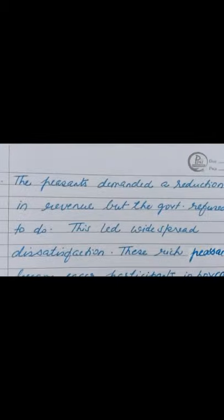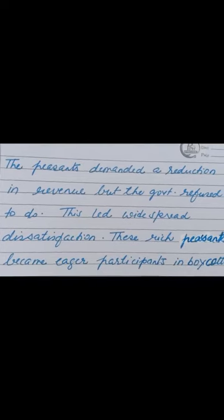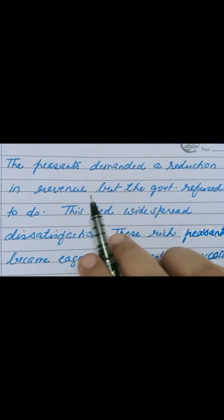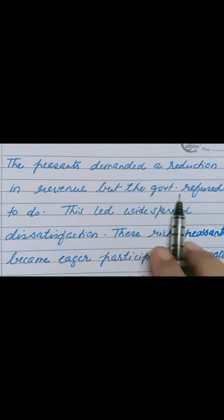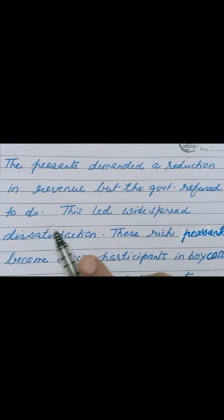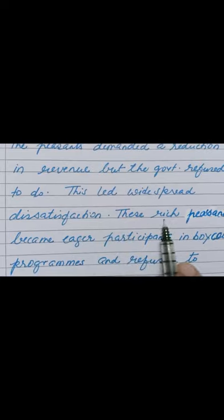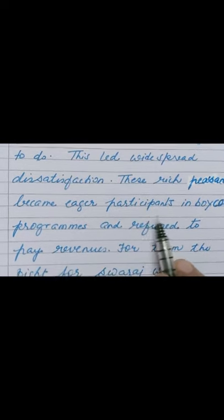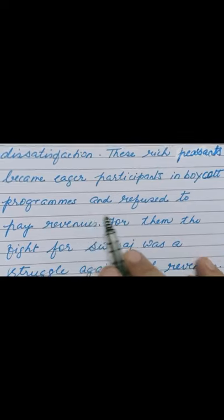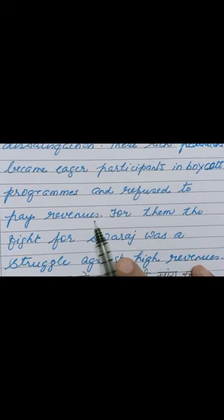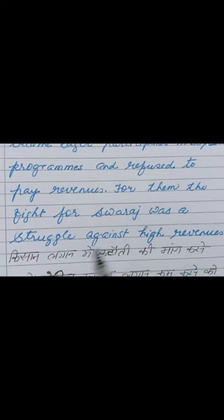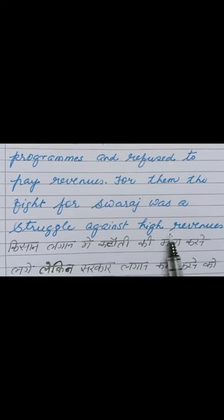The peasants demanded a reduction in revenue, but the government refused to do so. This led to widespread dissatisfaction, and these rich peasants became eager participants in boycott programs and refused to pay revenues. For them, the fight for Swaraj was a struggle against high revenues.